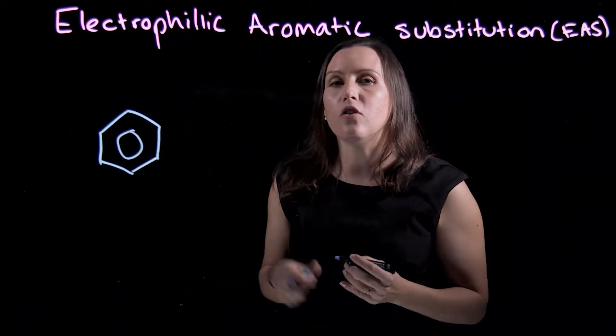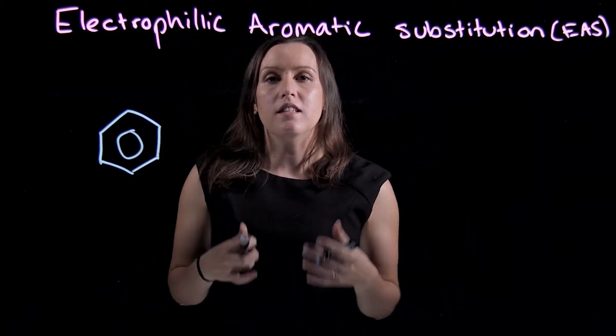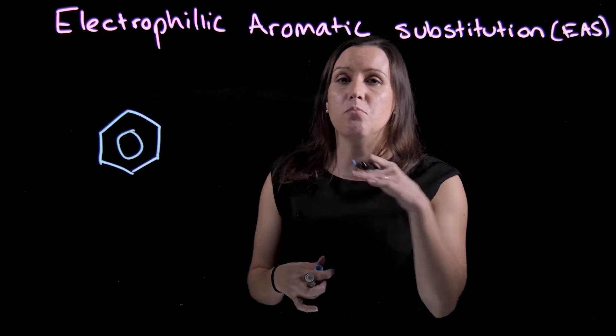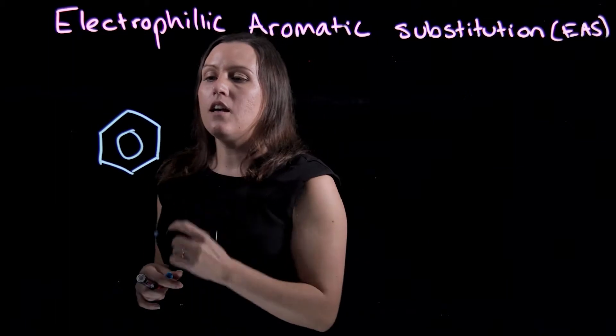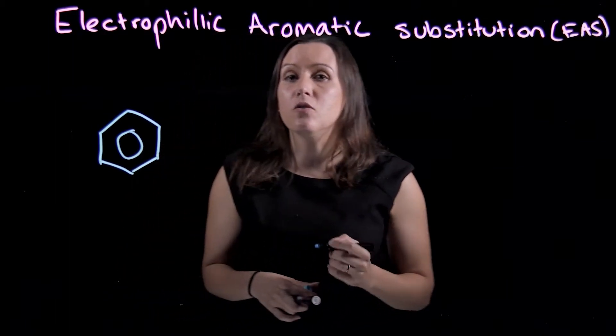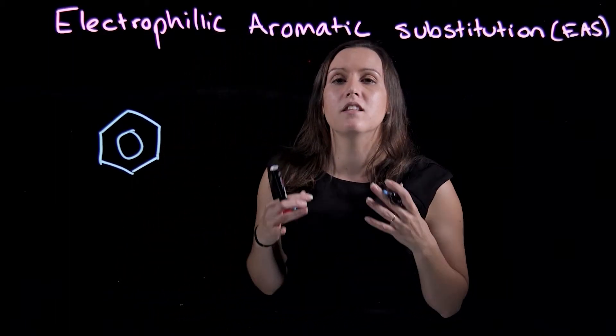The circle indicates that there's a sea of delocalized electrons above and below the plane of that ring. They're very, very stable. They don't do addition reactions because it breaks the delocalized electrons within the ring system.